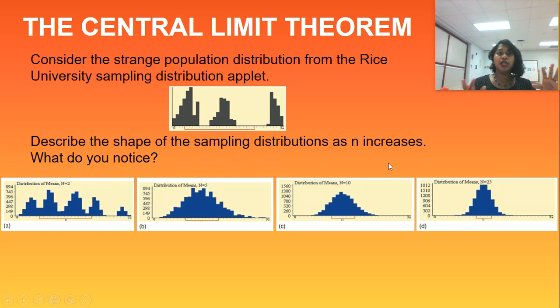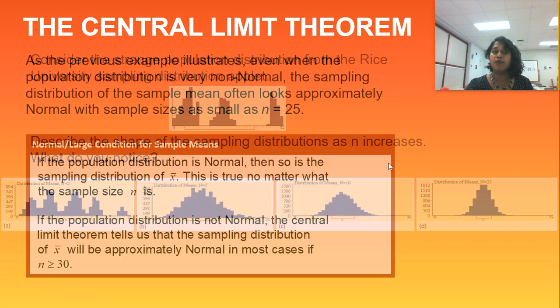So even though you've got this crazy, strange, original population distribution, the central limit theorem states that as n gets larger, my sampling distribution must become more normal.